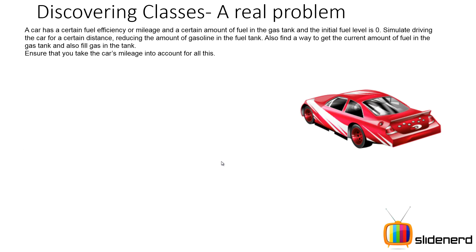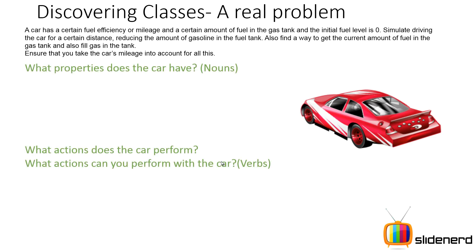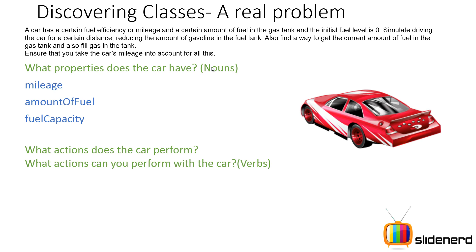Next, ask yourself two questions: what properties does the car have, and what actions does the car perform — or what actions can you perform with the car? The car has a mileage, as given in the problem: a car has a certain fuel efficiency or mileage. It also has a certain amount of fuel in the gas tank. It also has a fuel capacity, because you cannot just keep adding fuel — the car obviously has a certain fuel limit inside its tank.